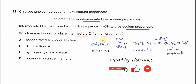First, we need to compare the chloroethane with the sodium propanoate. For the chloroethane, we know that it has two carbons and the salt has three carbons. So when there is an extra carbon, we need to think about the cyanide.